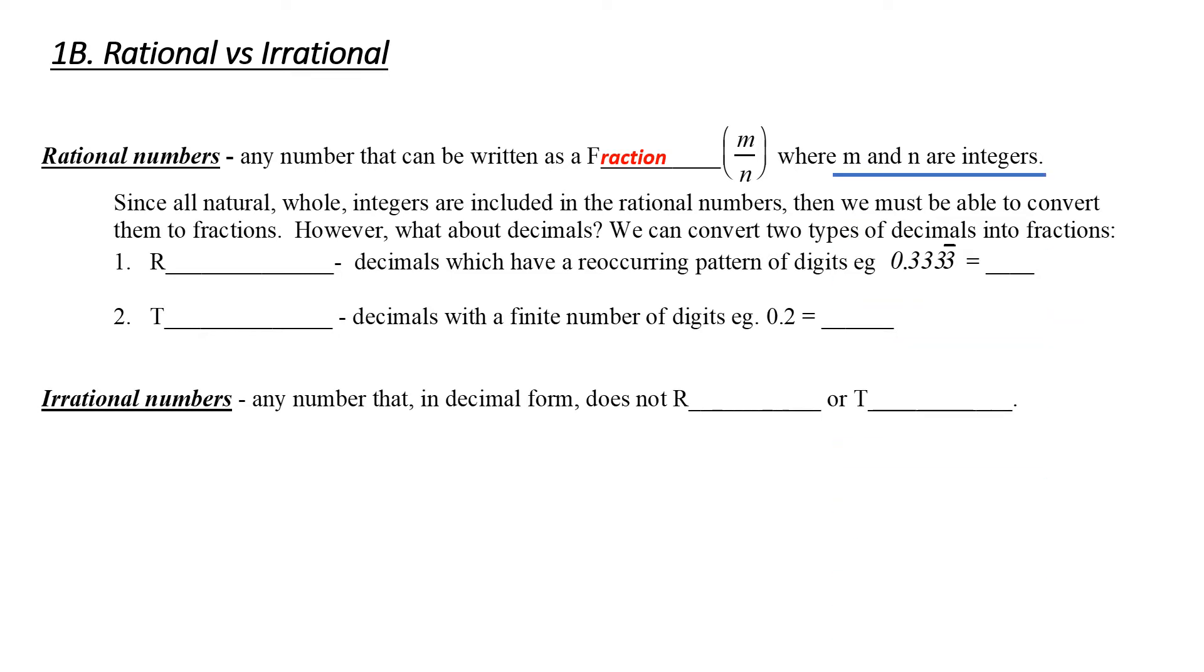There are decimals that are repeating. What does that mean when it says repeating? It means the pattern occurs over and over again. Notice I've given you an example of 0.333. This is equal to 1 over 3. And if you punched 1 over 3 into your calculator, you would get 0.333 repeating.